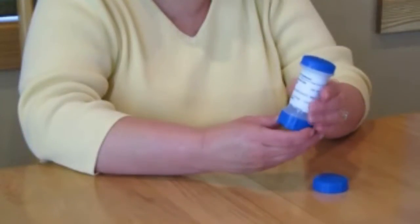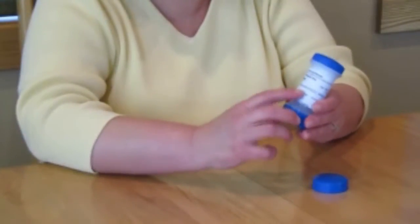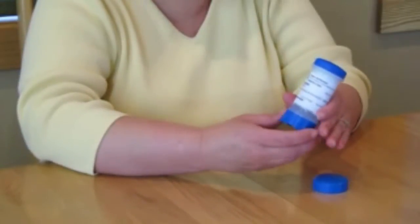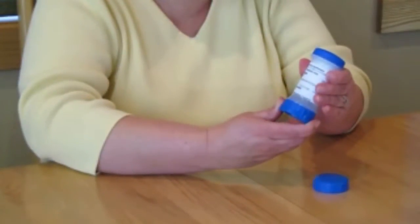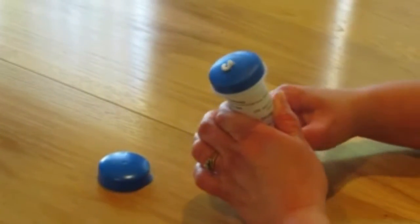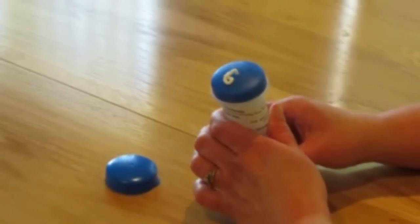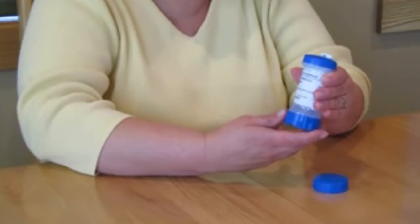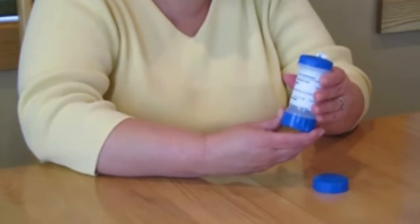Turn the base of the dispenser the number of clicks that is specified on your label. The base will solidly click or lodge into place. You will feel it and hear it do so. Leave it in this position after every click. Do not try to use partial clicks.